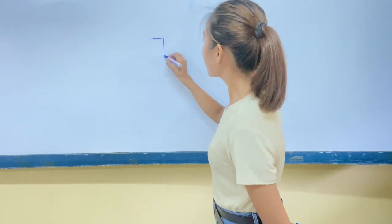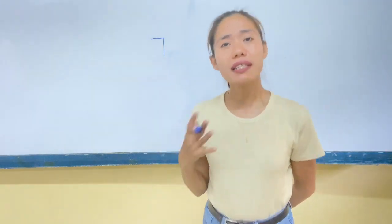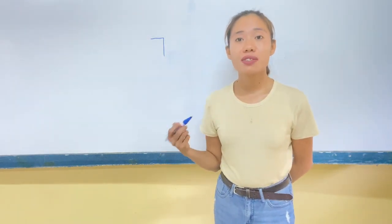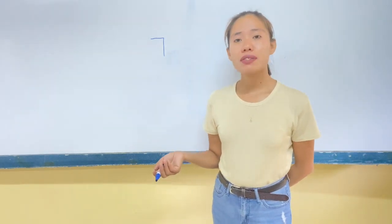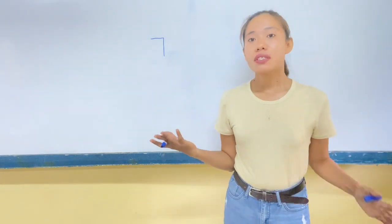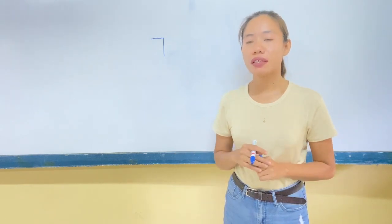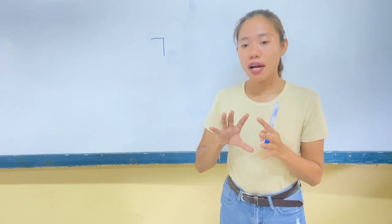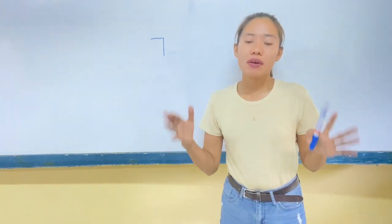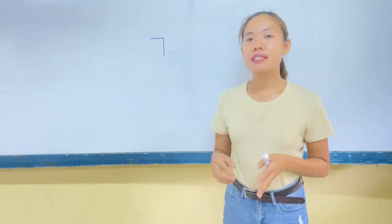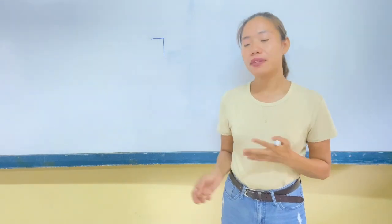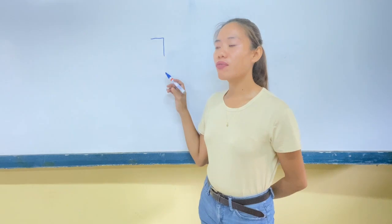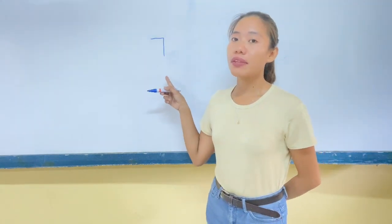There are proper strokes that we have to follow. The first is Giyok. In writing Giyok, we have to remember that this is composed of only one stroke. It's written this way. When you write it, it should be straight. Don't rush when writing because the tendency is if you rush, it will become crooked and it won't be executed correctly.